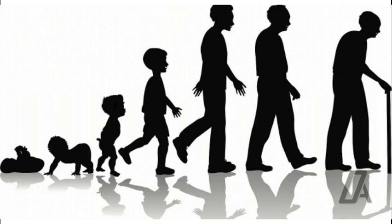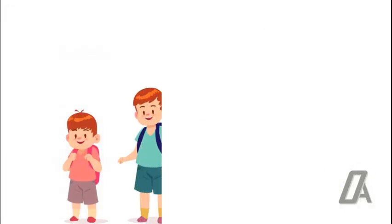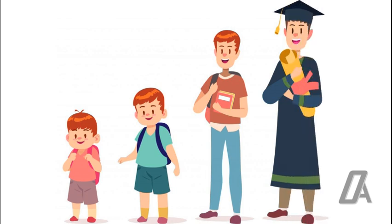Chronological age is the measured amount of time since birth. This type of age has little place in the assessment of maturational status of an individual — it is not a good indicator of a person's growth status.